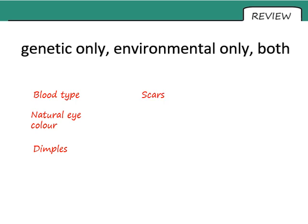Next, three things caused by the environment only, meaning your DNA has no effect on them. Scars — you do not inherit scars; you get them from traumatic injury. Tattoos — you could have the most heavily tattooed parents in the world and still not be born with any; you have to have been tattooed yourself. And piercings — again, you could have parents with hundreds of piercings each and you won't be born with any.